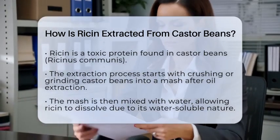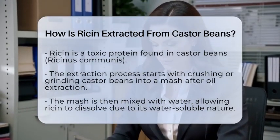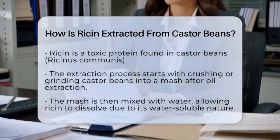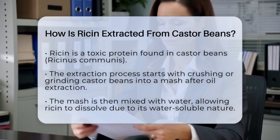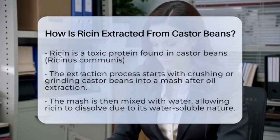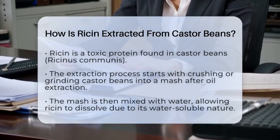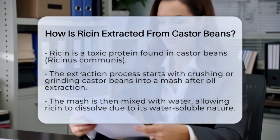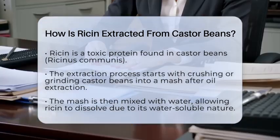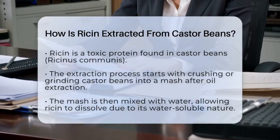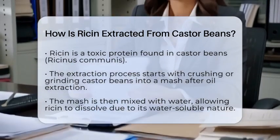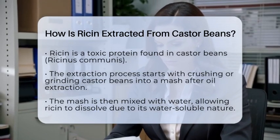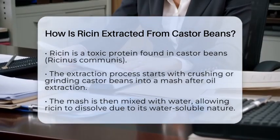The extraction process is quite fascinating and involves several steps to isolate this potent toxin. First, the journey begins with the castor beans themselves. These beans are crushed or ground into a mash or cake. This mash is what remains after the oil has been extracted from the beans.